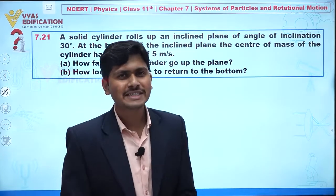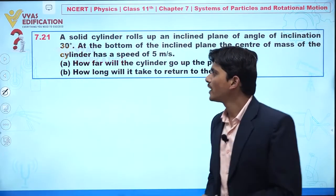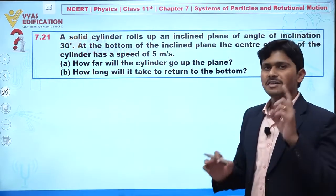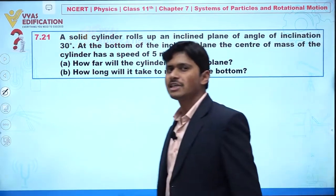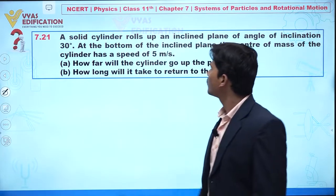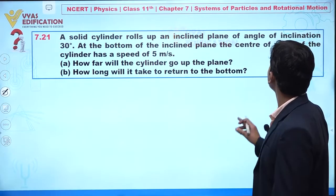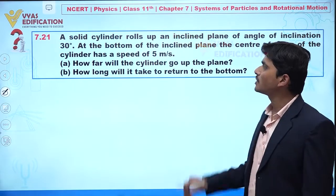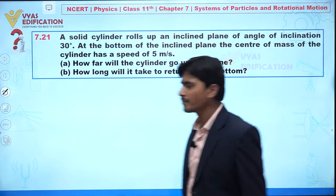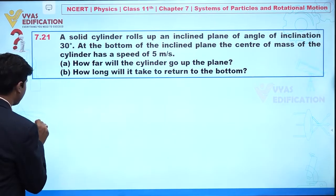Now students, we are going to discuss question number 7.21. In this question, it is given that a solid cylinder rolls up an inclined plane of angle of inclination 30 degrees. Let's suppose I am drawing here an inclined plane.